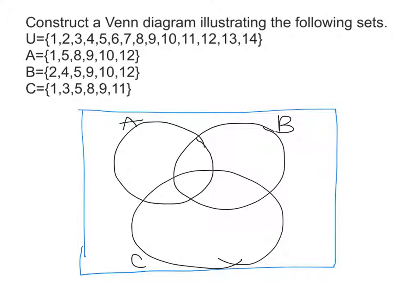I like to go through and look at it one number at a time to see what everything has in common. Starting with the number one: it is in the universal set, in Set A, and in Set C, but it is not in Set B. So we're going to put it in the little wedge between A and C, but not in the triple wedge.